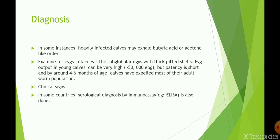For diagnosis: in some instances, heavily infected calves may emit a butyric acid or acetone-like odor. Examination of eggs in feces reveals subglobular eggs with thick pitted shells under the microscope. In young calves, egg output can be very high — more than 50,000 eggs per gram on the EPG test. However, patency is short, and by around 4 to 6 months of age calves have expelled most of their adult worm burden. Diagnosis can also be made by clinical signs, and in some countries by serological methods such as ELISA.